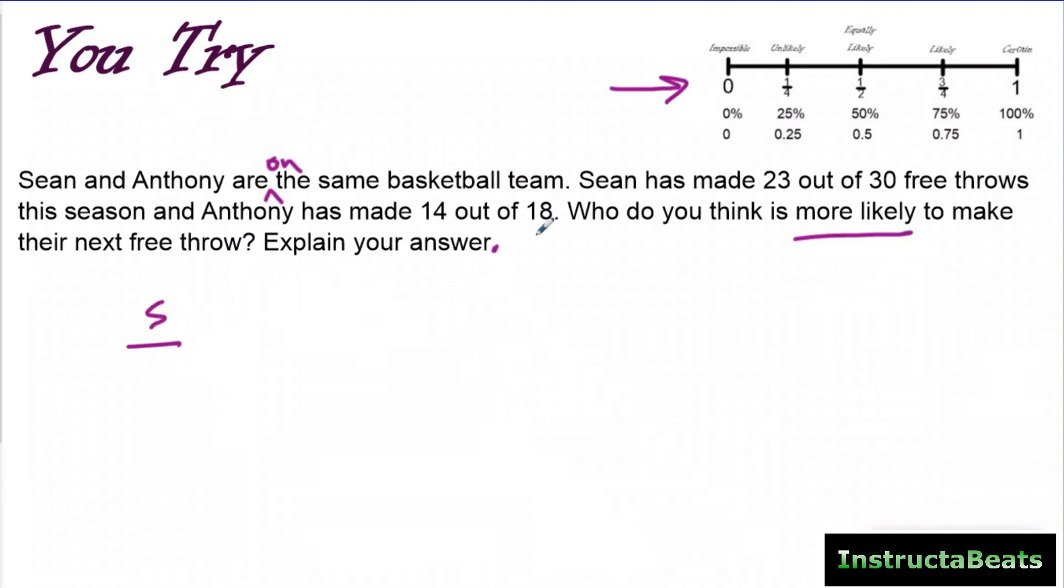So here I have Sean, and Sean has shot 30 free throws. That's the total. And he's made 23 out of 30. So the probability, his experimental probability that he will make the next free throw is 23 30ths. So again, I like to do this as percents because it's just easier to compare percents. And I'm going to round it up, but it would be 77%. So he's made 77% of his free throws, so we use that experimental probability to predict that he has a 77% chance of making the next one. Now that up here on my number line is a little bit more than likely. So that's pretty good.